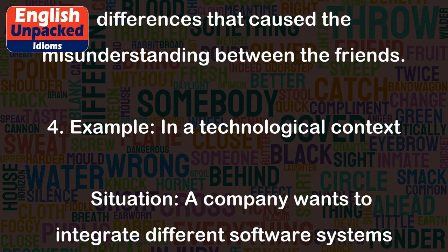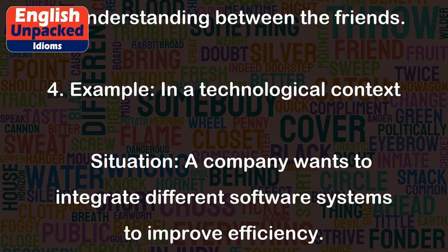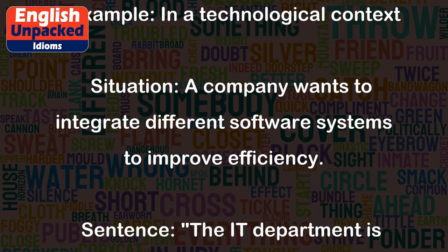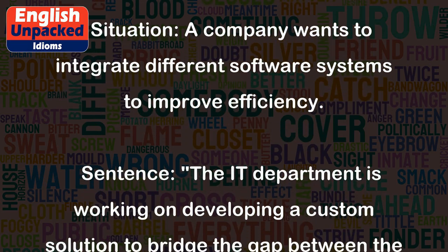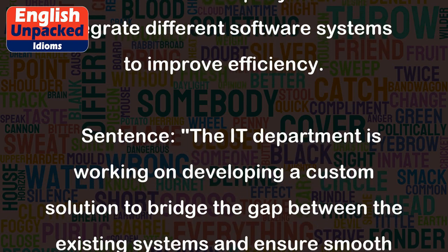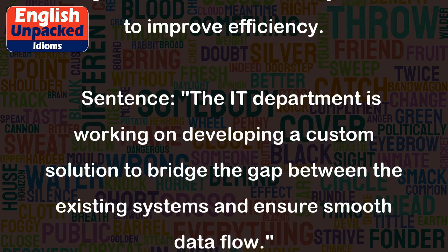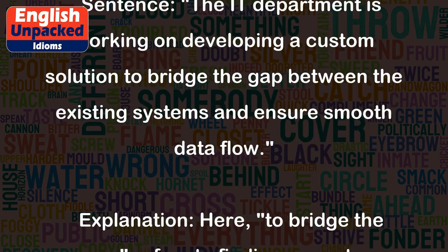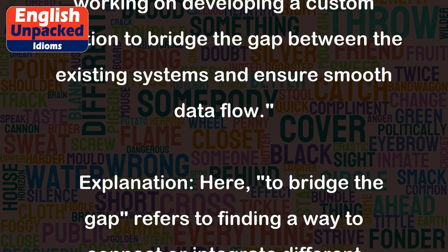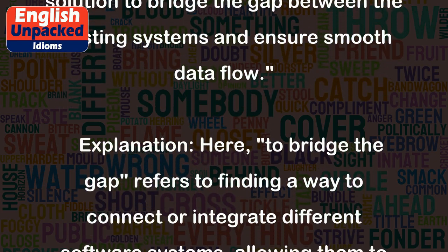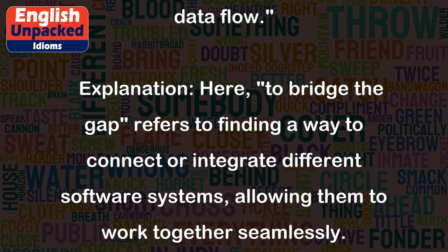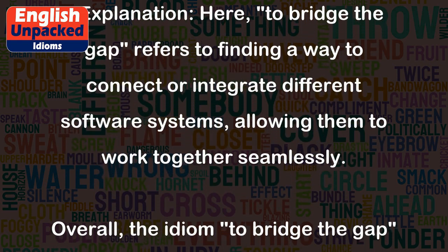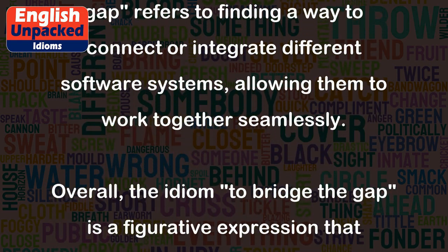Example 4 — In a technological context: A company wants to integrate different software systems to improve efficiency. The IT department is working on developing a custom solution to bridge the gap between the existing systems and ensure smooth data flow. Here, 'to bridge the gap' refers to finding a way to connect or integrate different software systems, allowing them to work together seamlessly.